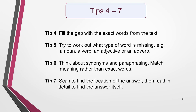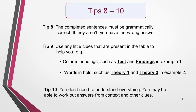Tip 7: Scan to find the location of the answer, then read in detail to find the answer itself. Tip 8: The completed sentences must be grammatically correct. If they aren't, then you have the wrong answer. Tip 9: Use any little clues that are present in the table to help you understand the type of information you need to find — for example, column headings such as 'test' and 'findings' in the first example, or words in bold such as 'theory 1' and 'theory 2' in the second example. Tip 10: You don't need to understand everything. Even if some of the vocabulary is unfamiliar, you'll probably be able to work out the answers from context and other clues.